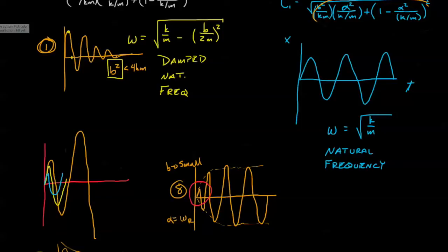A good way to feel why the resonant frequency is longer than the damped natural frequency is to imagine that the damped natural frequency wants to return to equilibrium position pretty quickly, but the resonant forcing is driving the particle further away from equilibrium. Sure, it's driving it faster back to equilibrium, but its influence in increasing the amplitude carries greater weight, so we see the resonant frequency getting longer.